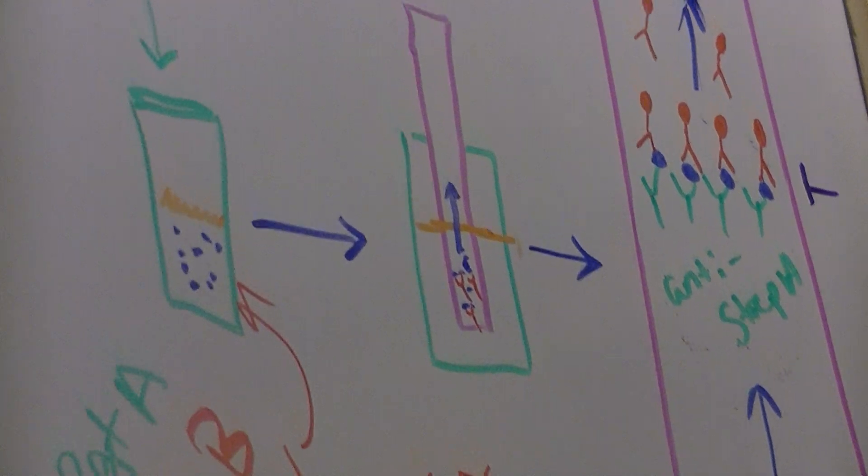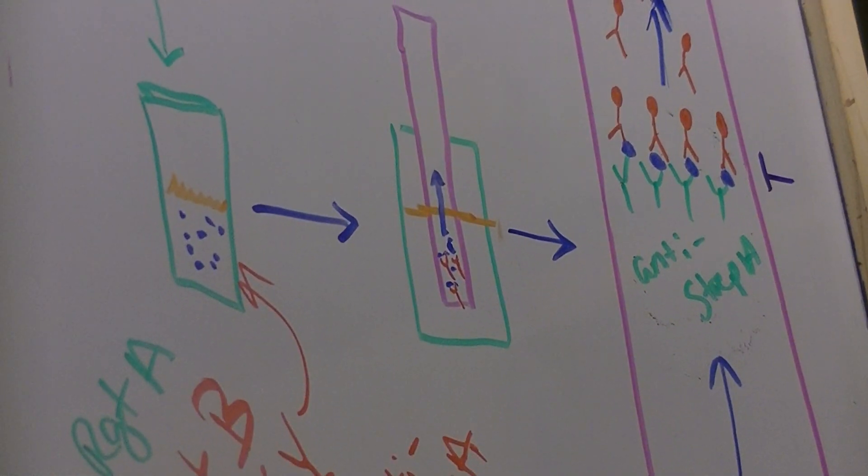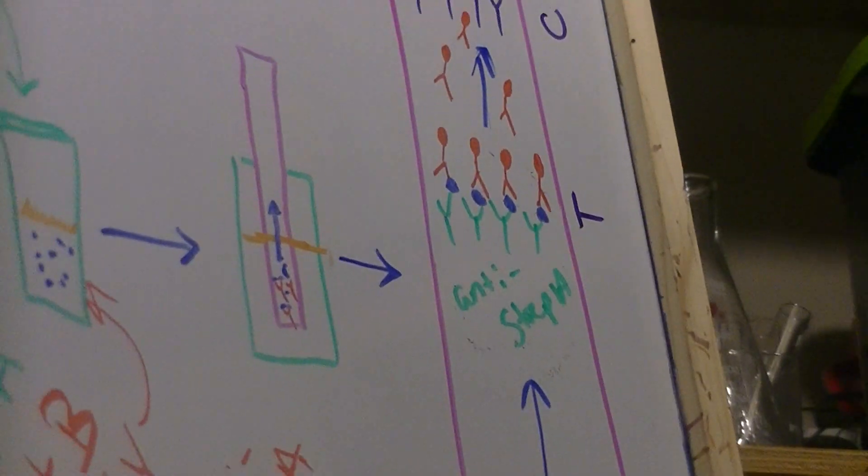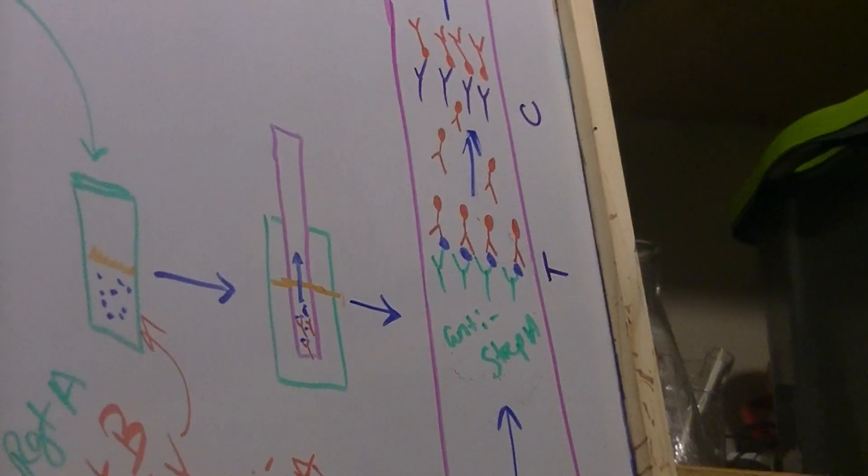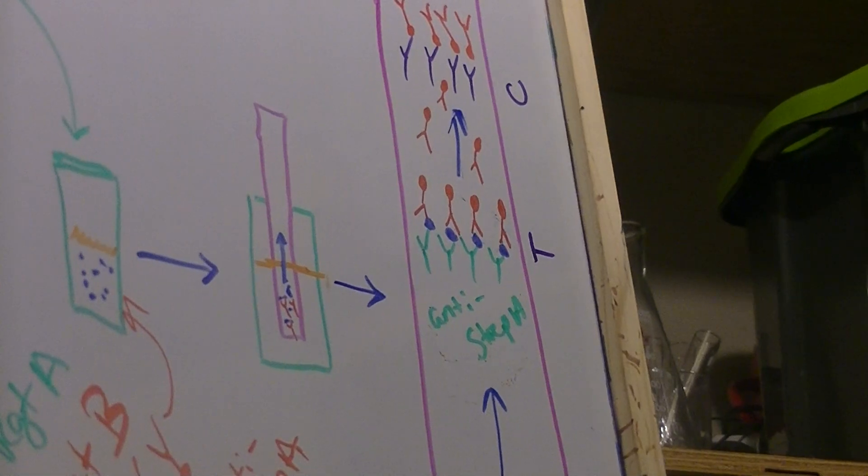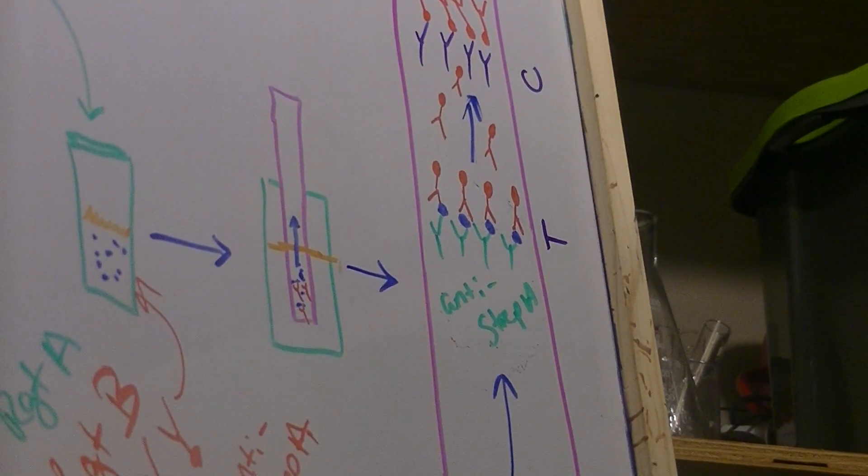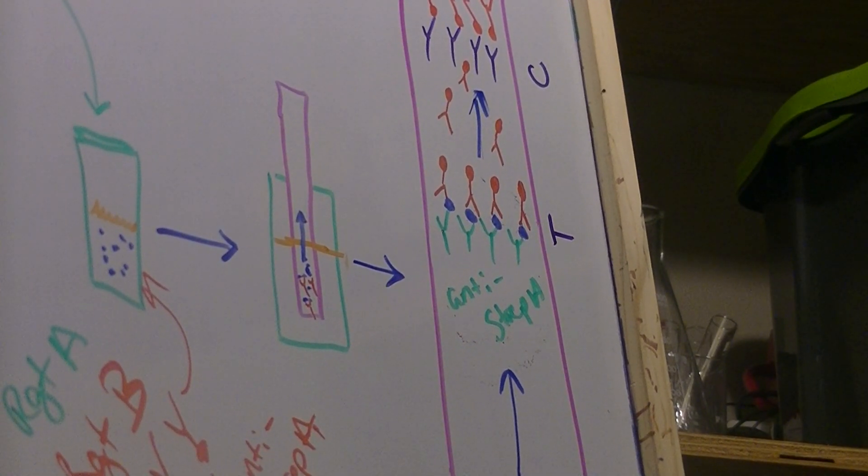Now that the strep are attached to antibodies in that extraction tube, we can put in the testing strip. In the testing strip, if you were to zoom in microscopically, you would see that there are some more anti-strep A antibodies.